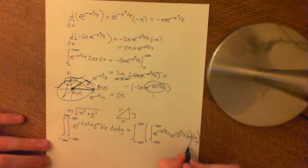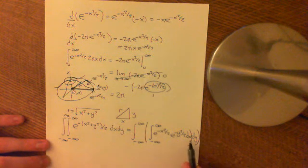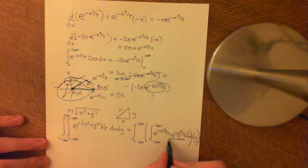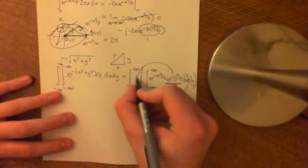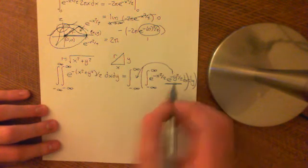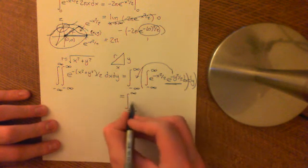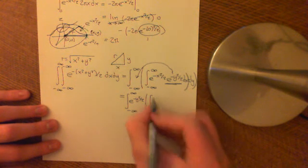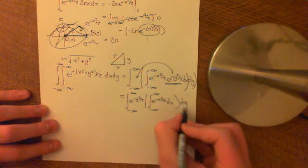Writing this with the dy outside the brackets, we take the integral with respect to x first. As far as the inner integral with respect to x is concerned, e to the negative y squared over 2 is just a constant and can be pulled out. So we get e to the negative y squared over 2 times the integral from negative infinity to infinity of e to the negative x squared over 2 dx, integrated with respect to y.